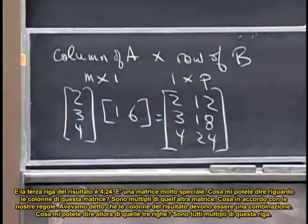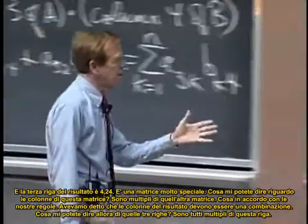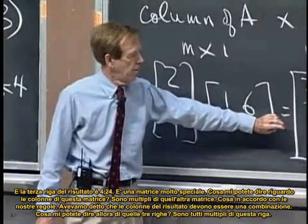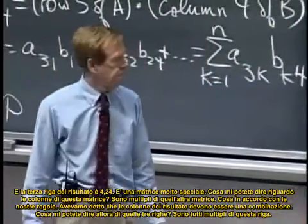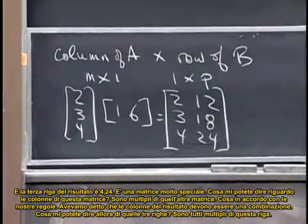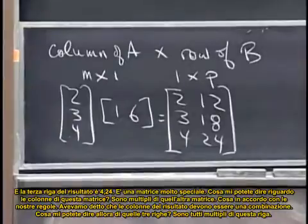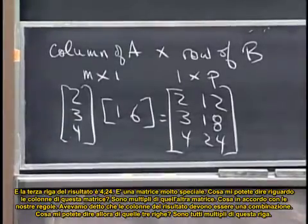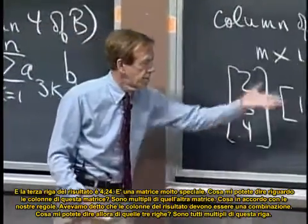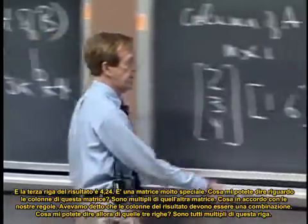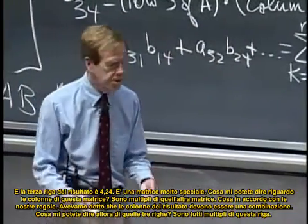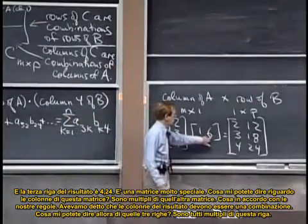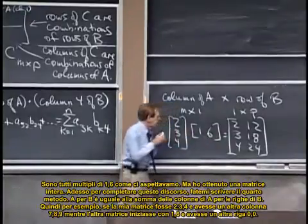Actually, what am I, I mean, that's a very special matrix there. Very special matrix. What can you tell me about its columns, the columns of that matrix? They are multiples of this guy, right? They are multiples of that one. Which follows our rule? We said that the columns of the answer were combinations, but there's only, to take a combination of one guy, it's just a multiple. The rows of the answer, what can you tell me about those three rows? They're all multiples of this row. They're all multiples of one-six, as we expect. But I'm getting a full-sized matrix.